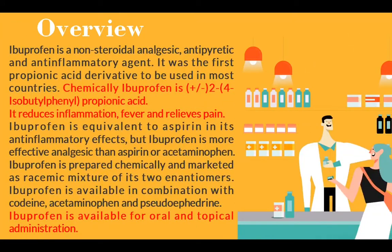Let's start with the overview. Ibuprofen is a non-steroidal analgesic, antipyretic, and anti-inflammatory agent. It was the first propionic acid derivative to be used in most countries. Chemically, ibuprofen is propionic acid. It reduces inflammation, fever, and relieves pain.